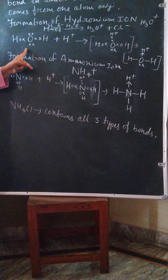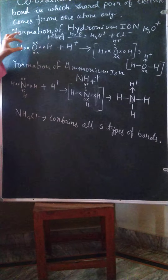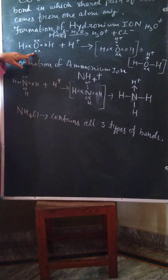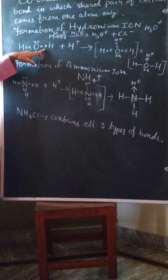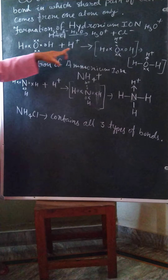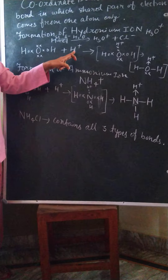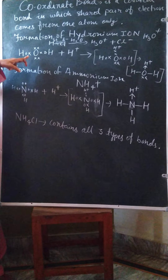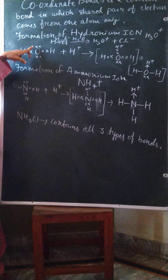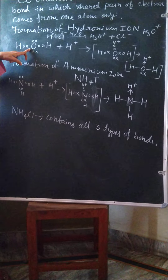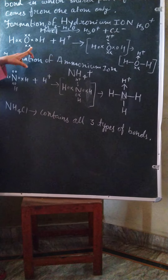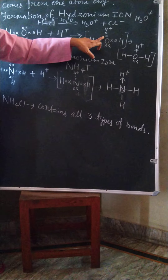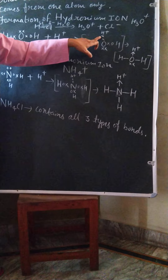So this H+ separated from HCl comes and combines with water. Water is a covalent compound. In the structure of water, the central oxygen atom has two lone pairs of electrons — one above and one below — and there are two covalent bonds. This H+ comes and combines with water, in which the shared pair of electrons is given by the oxygen atom for sharing between H+ and O.